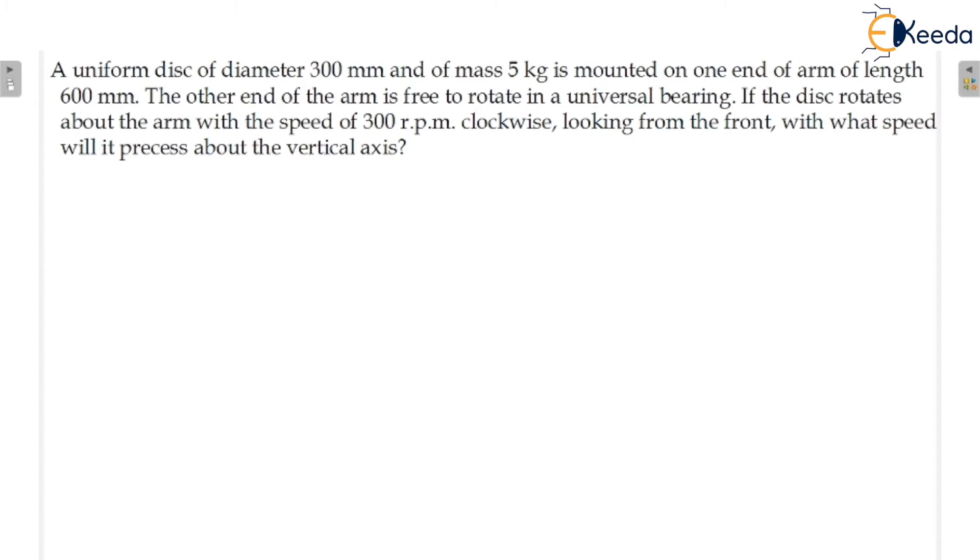A uniform disc of diameter 300 mm and mass 5 kg is mounted on one end of arm of length 600 mm. The other end of the arm is free to rotate in the universal bearing and if the disc will rotate about the arm with a speed of 300 rpm clockwise, looking from the front, with what speed will it precess about the vertical axis. That means we need to calculate the velocity of precession.